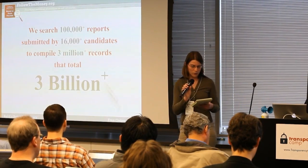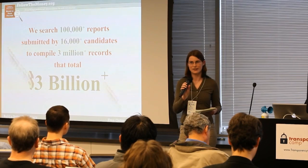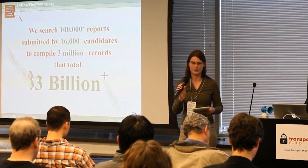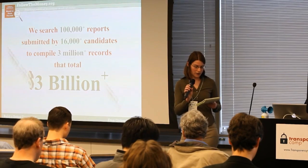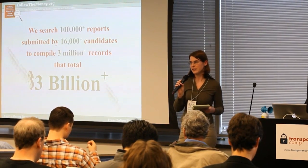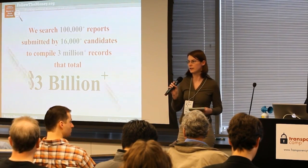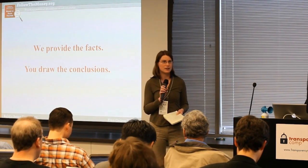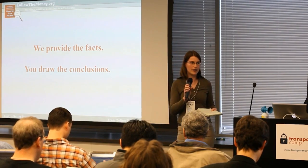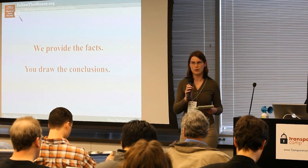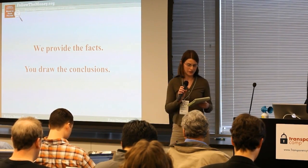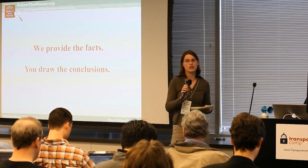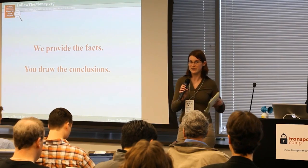The reason we only do state-level is because that still means we're collecting over 100,000 reports every election cycle, and we have to work with 50 different sets of rules for these reports. They come to us in all kinds of different formats — electronic databases, PDF files, paper files — and we combine them all together to create our database. A lot of that means we have to enter it manually and then check all of it to make sure we entered it correctly.